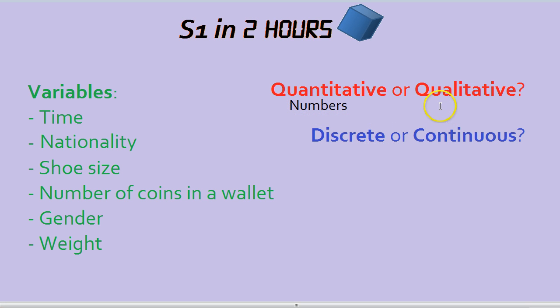Qualitative variables on the other hand involve qualities. You can only use words really to describe qualitative variables. That's the difference.